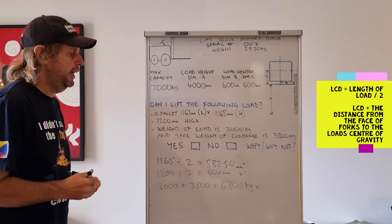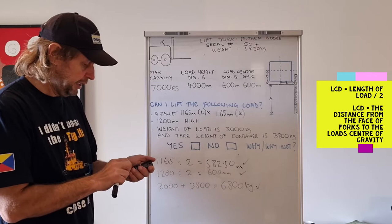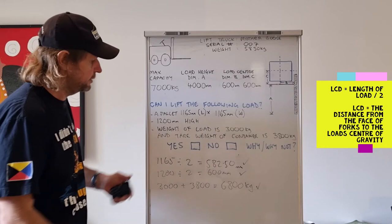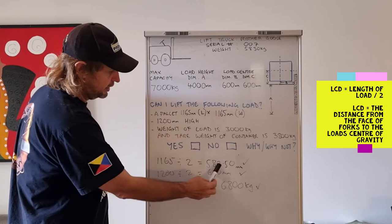And just for an example, if this was 300 kilos more, so let's add 300 kilos to 3,800. So 3,000 plus 3,800 plus 300 equals 7,100 kilos. We'd go over that maximum rated capacity and we couldn't lift it. If these were over, if this landed over the 600 millimeters, you cannot lift that load.